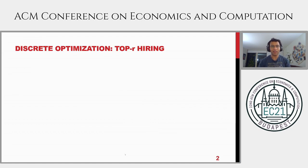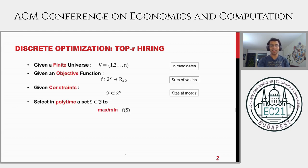Let's start off with a simple discrete optimization problem, which I call the top-R hiring problem. The high-level goal is: given N candidates, you want to hire R of them to maximize the sum of their values. Formally, the discrete optimization setup involves a finite universe of N candidates, an objective function such as the sum of candidate values, and constraints on how many you can hire. The goal is to find in polynomial time a feasible set satisfying your constraints so as to maximize or minimize your objective.